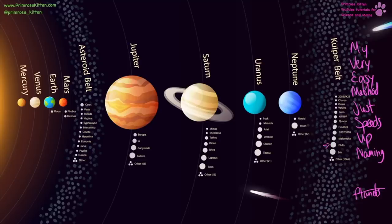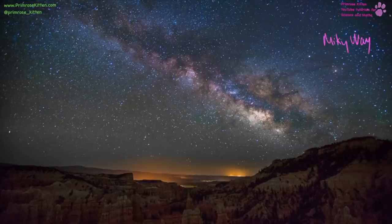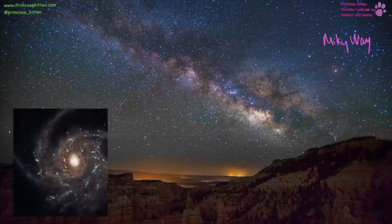Pluto used to be a planet but is now a dwarf planet. The galaxy we live in is the Milky Way — we are on the edge of it, on one of the arms on the outside. In the middle is a black hole.